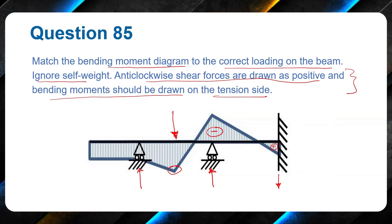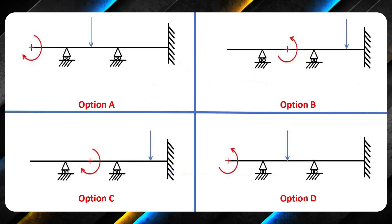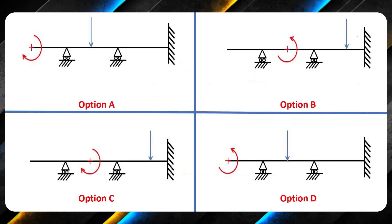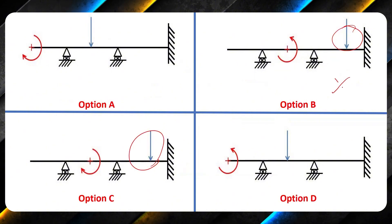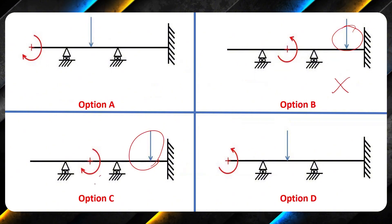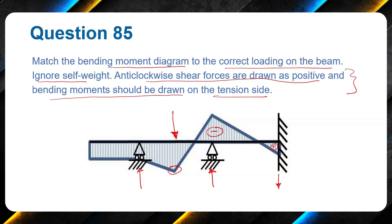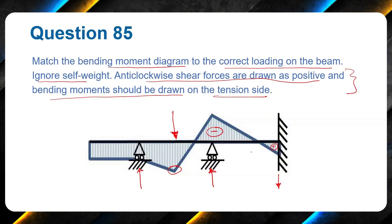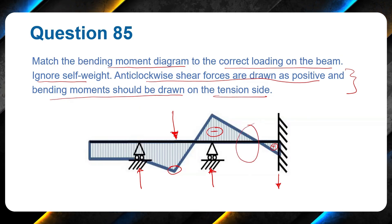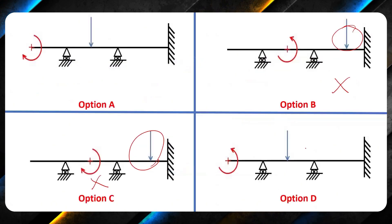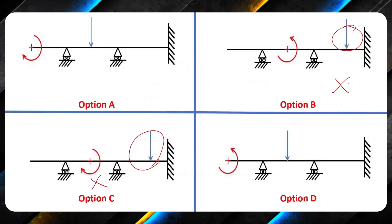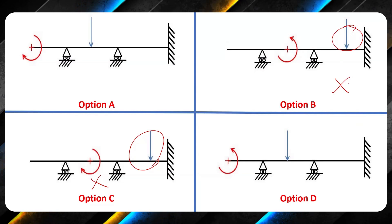There is a dip in the diagram, meaning a point load is being applied here and this reaction is upwards. Looking at the options, options B and C show a point load at this location — this is incorrect because a point load will always bring the diagram down, but the diagram is not coming down here. These two options are discarded.